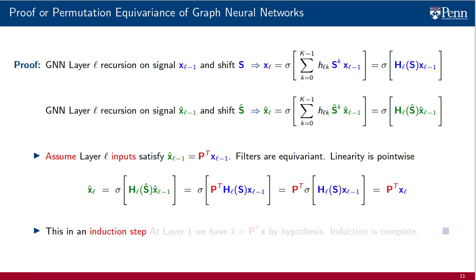More importantly, for the purposes of a formal proof, we have completed an induction step. We have proven that if the inputs to layer l are related by a permutation p-transpose, their outputs are related by p-transpose as well. But this output is the input to layer l+1. Thus, inputs to layer l+1 are related by permutation p-transpose if the inputs to layer l are related by permutation p-transpose. To complete the induction proof, notice that at layer 1 we have x-hat equal to p-transpose times x. This is the hypothesis of the theorem. The induction is now complete and the proof is done.